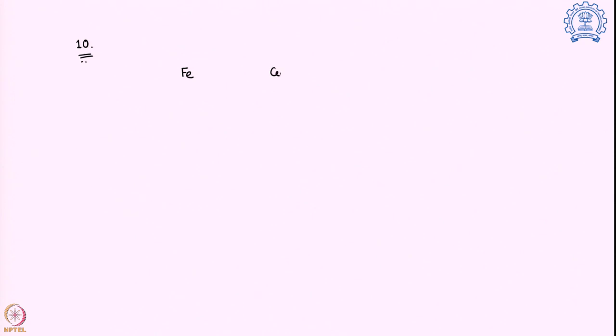Today we are going to take another trinuclear molecule, but here only two of the metal centers are iron and there is a cobalt in between and another iron on the other side. So two irons centered by a cobalt. This is only the metal centers — I also have to write the ligands around it, so let us take a look at what ligands are present in this particular molecule.